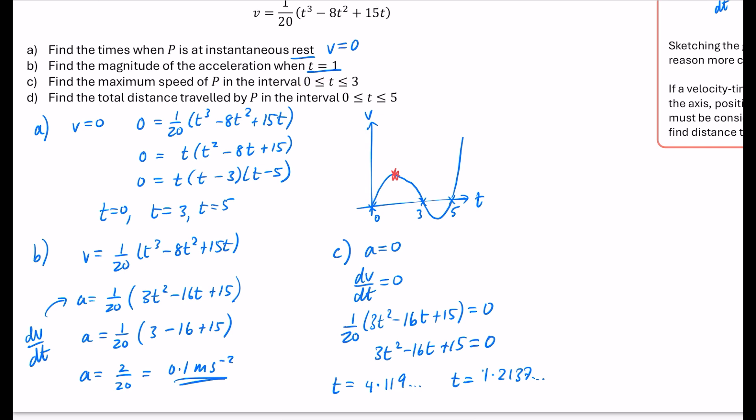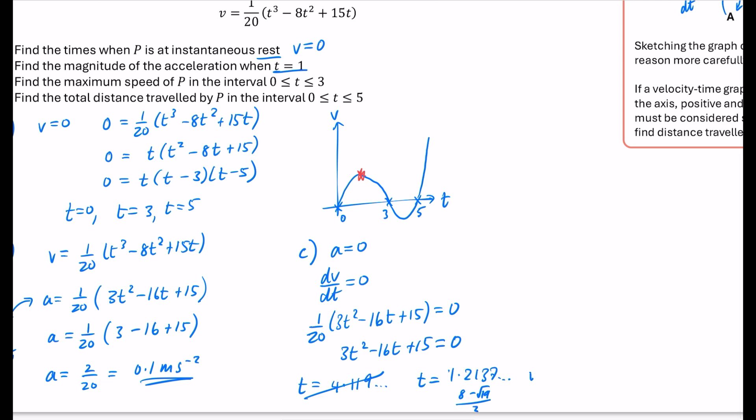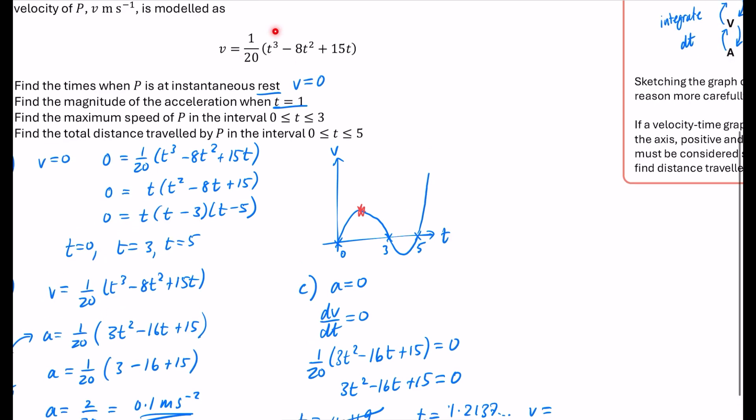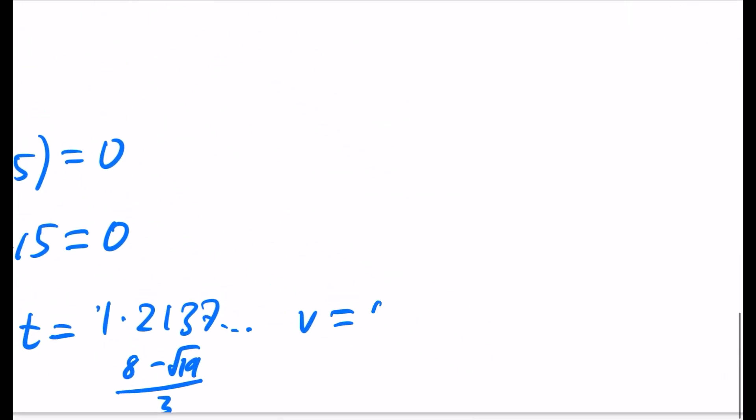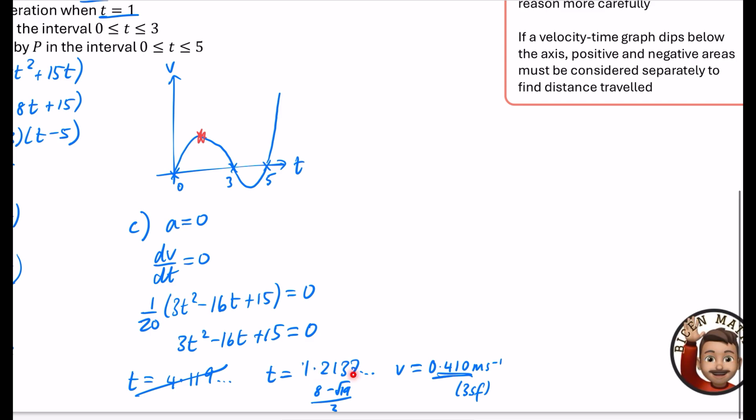It's for the part between 0 and 3, so we're wanting to use that one because it's in the interval between 0 and 3. Using that value, the exact value from my calculator is (8 - √19)/3. I need to find what the speed is, so I'm going to substitute that back into the velocity expression: 1/20(answer³ - 8×answer² + 15×answer). That to three significant figures is 0.410 meters per second.